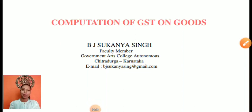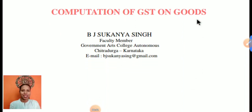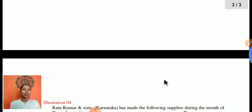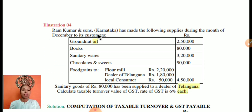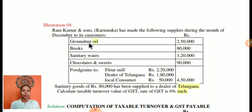Namaste and welcome to my classes. I come with some examples. Ram Kumar and Son, Karnataka, has made the following supply during the month of December to its customers. He is a common dealer supplying to his customers.